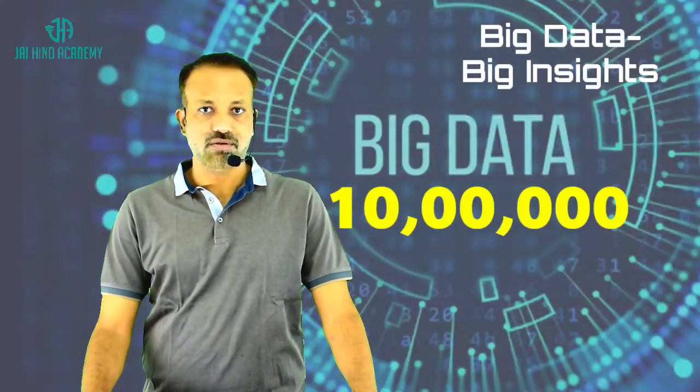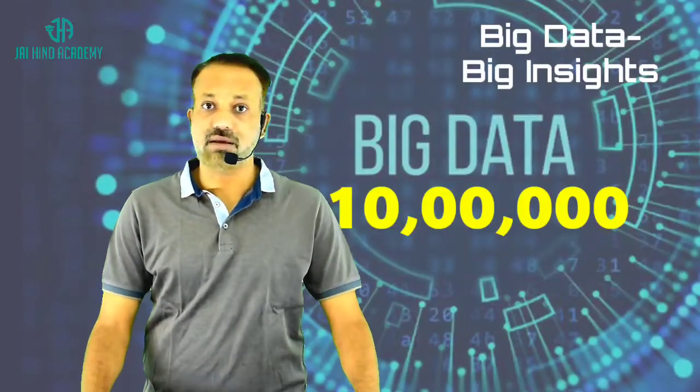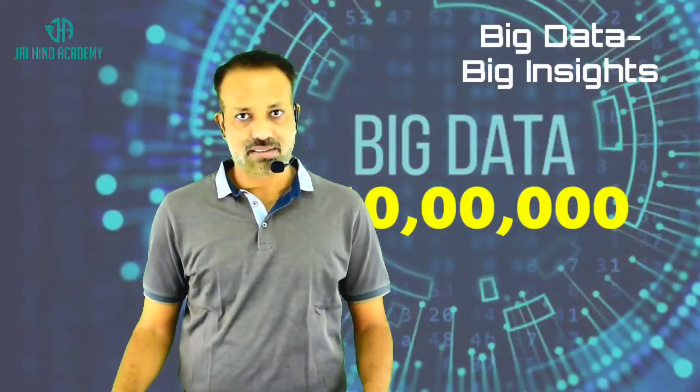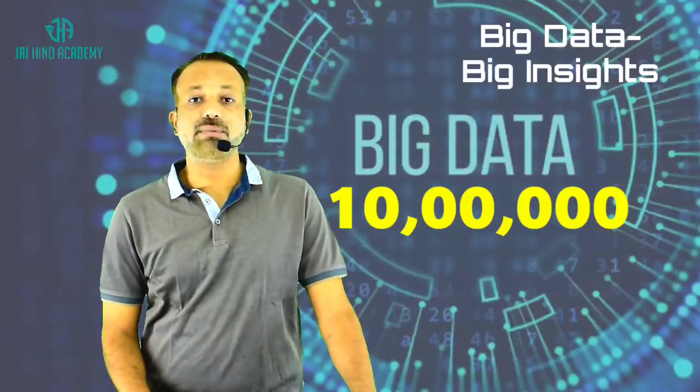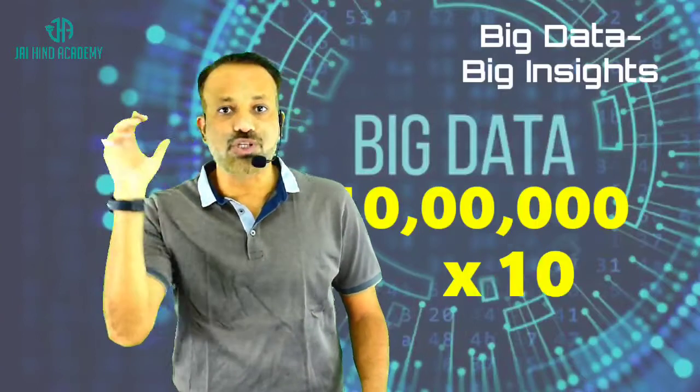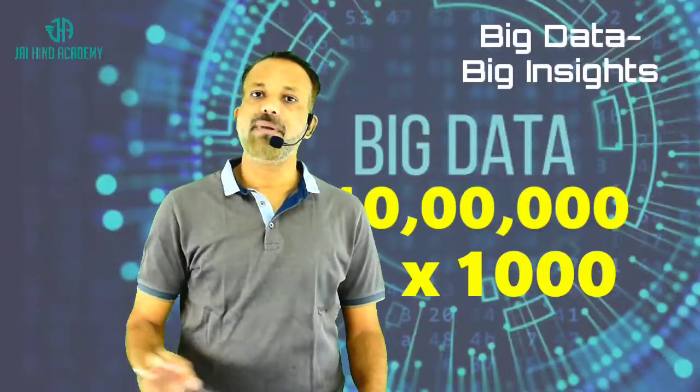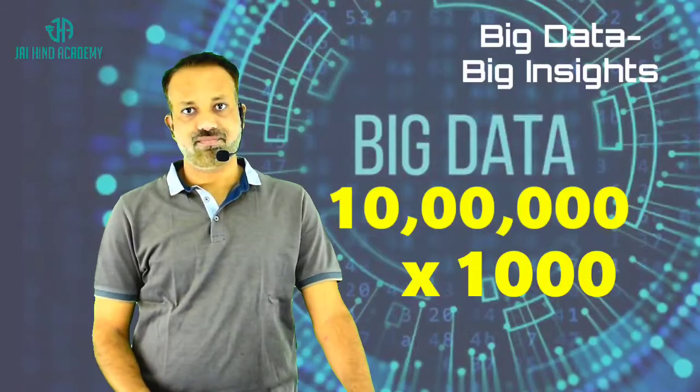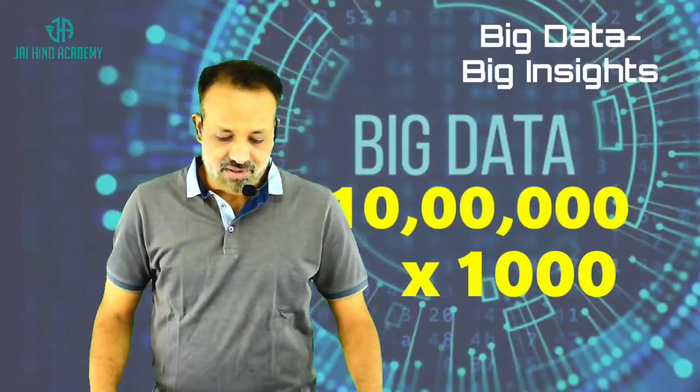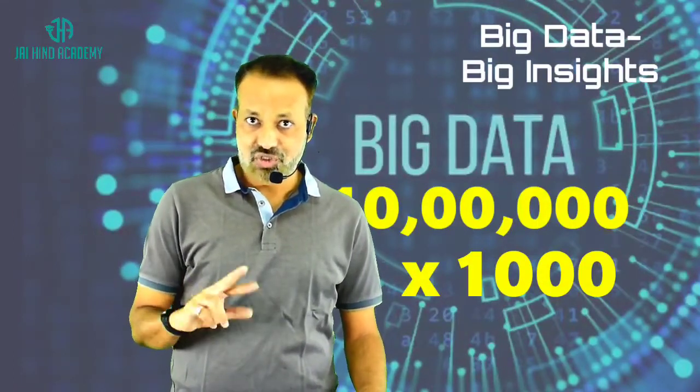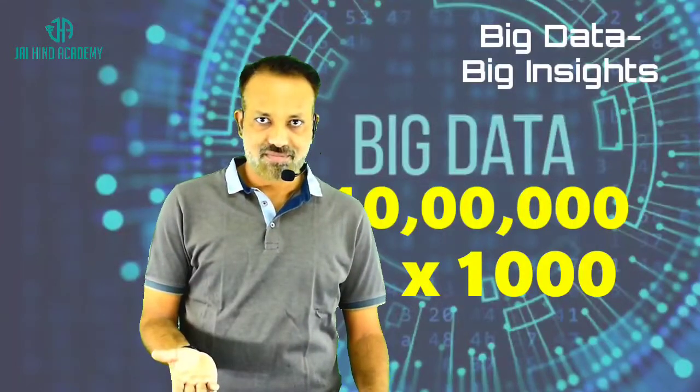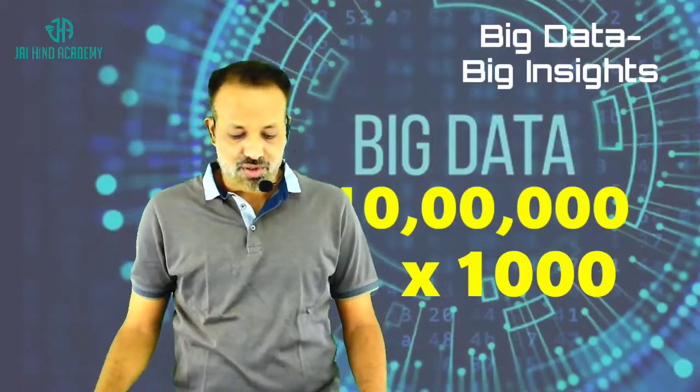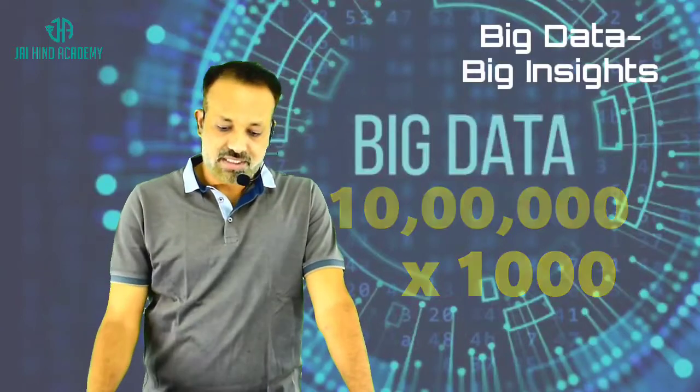One million means ten lakhs. So petabytes means thousand millions. We are only talking about terabytes TB, TB means thousand GB. So this information is petabytes, it is many times that. Petabytes or exabytes. What is exabytes? Units of information equal to one quintillion.